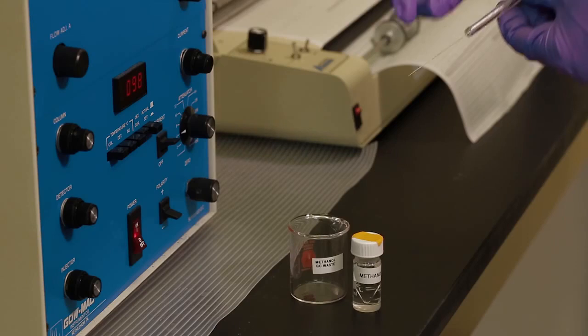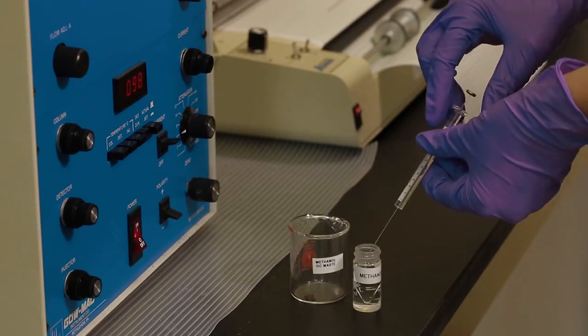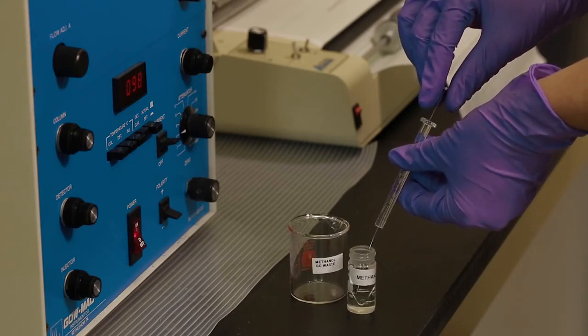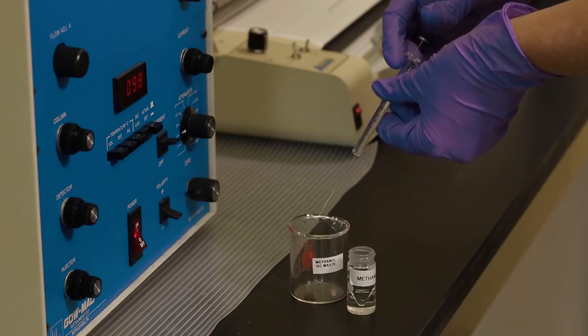When the sample runs through the column, clean the syringe that you used to inject your sample. Pull a solvent such as methanol into the syringe, then empty it into a waste container to clean it of any remaining sample.